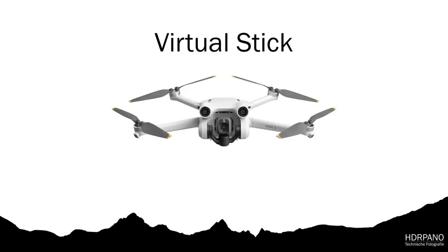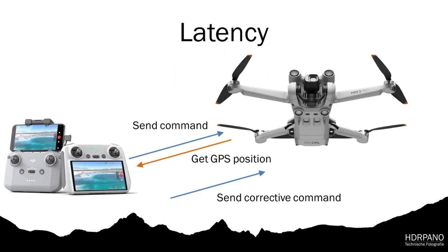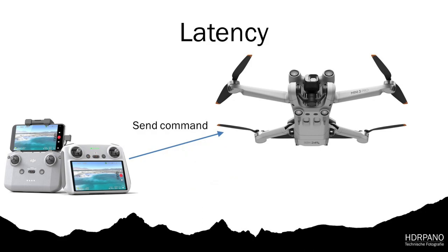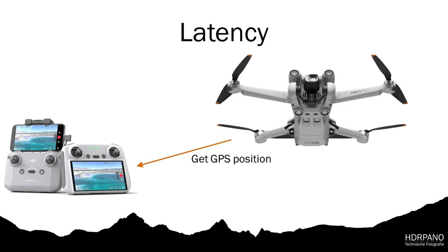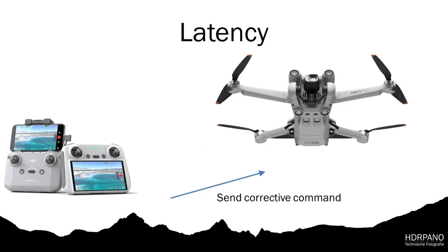The DJI Mini 3 Pro is a virtual stick aircraft, so the computing is made from the remote control. The remote control sends a command, checks the GPS position of the aircraft, and corrects the position of the aircraft. We do that 25 times per second.